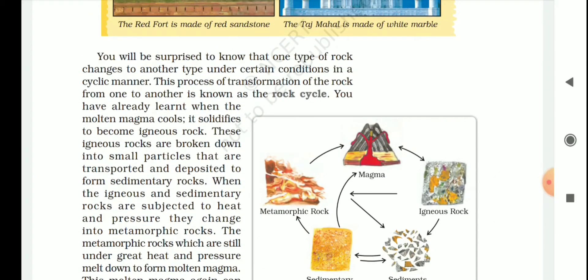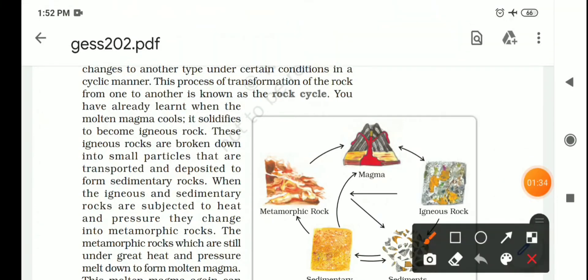Now we will learn Rock Cycle. What is the process of transformation of rocks from one form to another. We have studied Types of Rocks. Rocks are many types. Three types. What is a transformation? One form to another form. Like igneous, sedimentary, metamorphic.